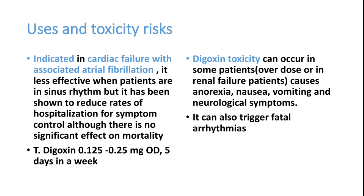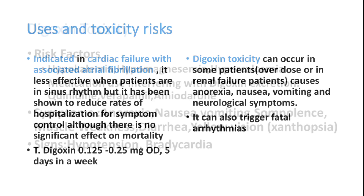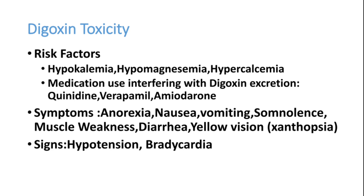Digoxin toxicity is especially seen in renal failure patients because digoxin is excreted through the kidneys. It causes anorexia, nausea, vomiting, neurological symptoms, and can trigger severe arrhythmias of almost all types. Risk factors include hypokalemia, hypomagnesemia, hypercalcemia, and medications that interfere with digoxin such as quinidine, verapamil, and amiodarone. Symptoms include anorexia, nausea, vomiting, increased sleepiness, muscle weakness, diarrhea, and yellow vision. Signs include bradycardia, heart blocks, and hypotension.